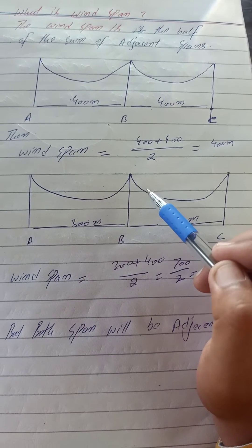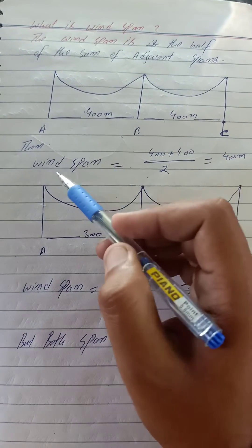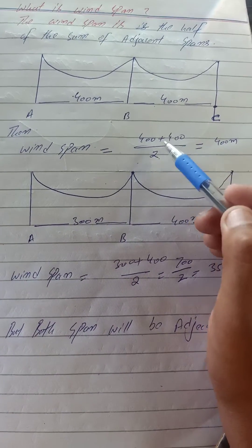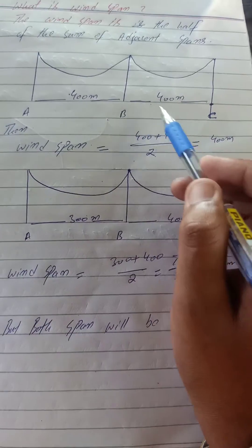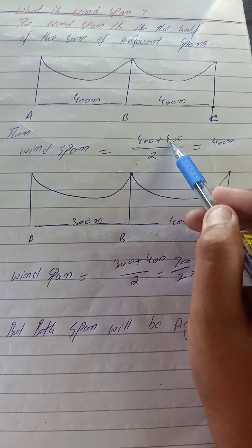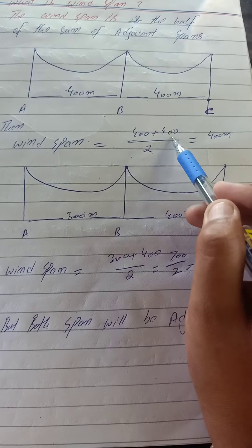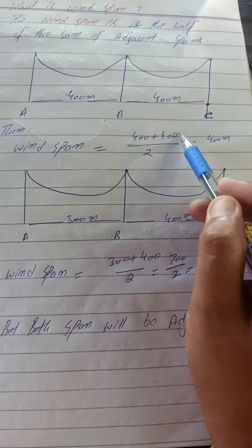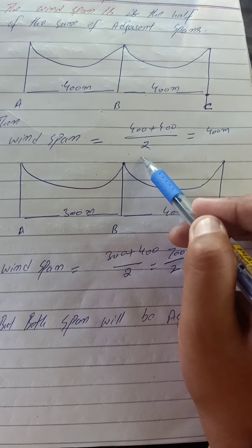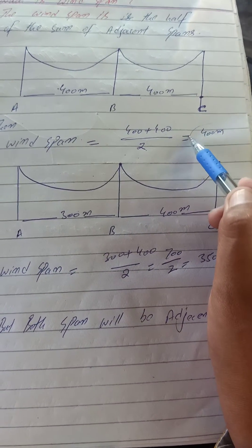If we want to calculate the wind span from its definition, it is half of the sum of two adjacent spans. So when we get the sum of two adjacent spans, 400 plus 400, it will become 800. And then we divide by 2 to get the half, it will be 400 meters. So in this case, the wind span will be 400 meters.